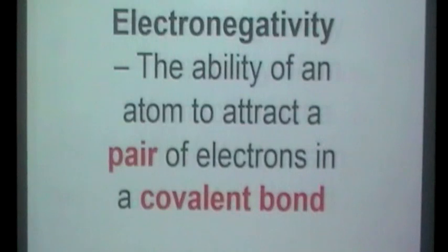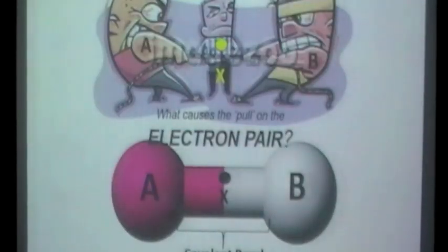Electronegativity is defined as the ability of an atom to attract a pair of electrons in a covalent bond. So we'll go back to the diagram. Atom A has electronegativity X, let's say, and atom B has electronegativity Y, so they're pulling by different amounts.